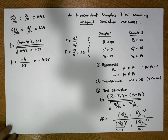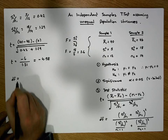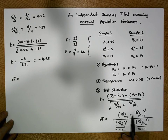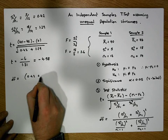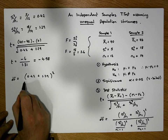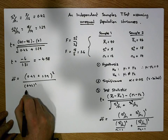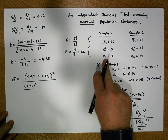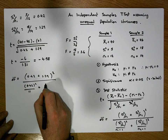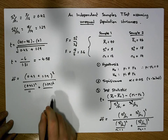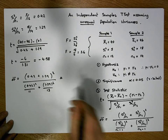Now that we've calculated our test statistic, we proceed to calculate our degrees of freedom. Our degrees of freedom in this case equals our two ratios — the first ratio plus the second ratio — squared, divided by the first ratio squared divided by the first sample size minus 1, which is 12 minus 1 equals 11, plus the second ratio squared divided by the second sample size minus 1, which is 13.